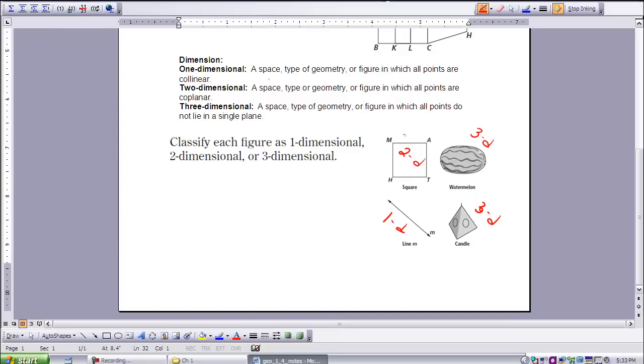As you can see here, this is an example of a plane. Planes are considered to be two-dimensional. This is a watermelon. It's well beyond a plane, so that is three-dimensional.